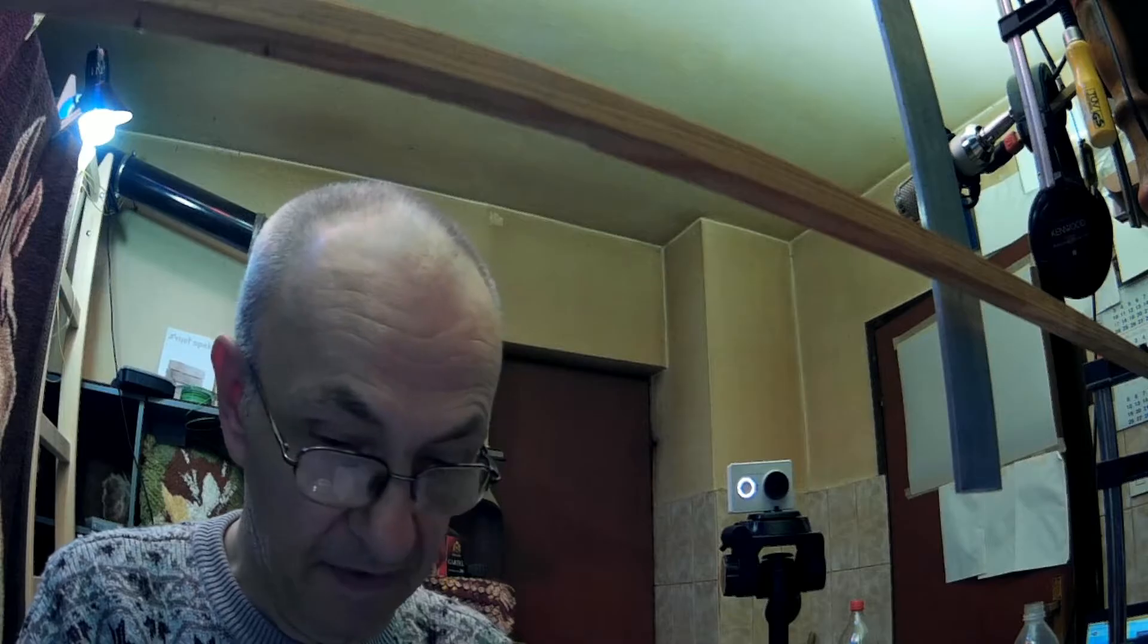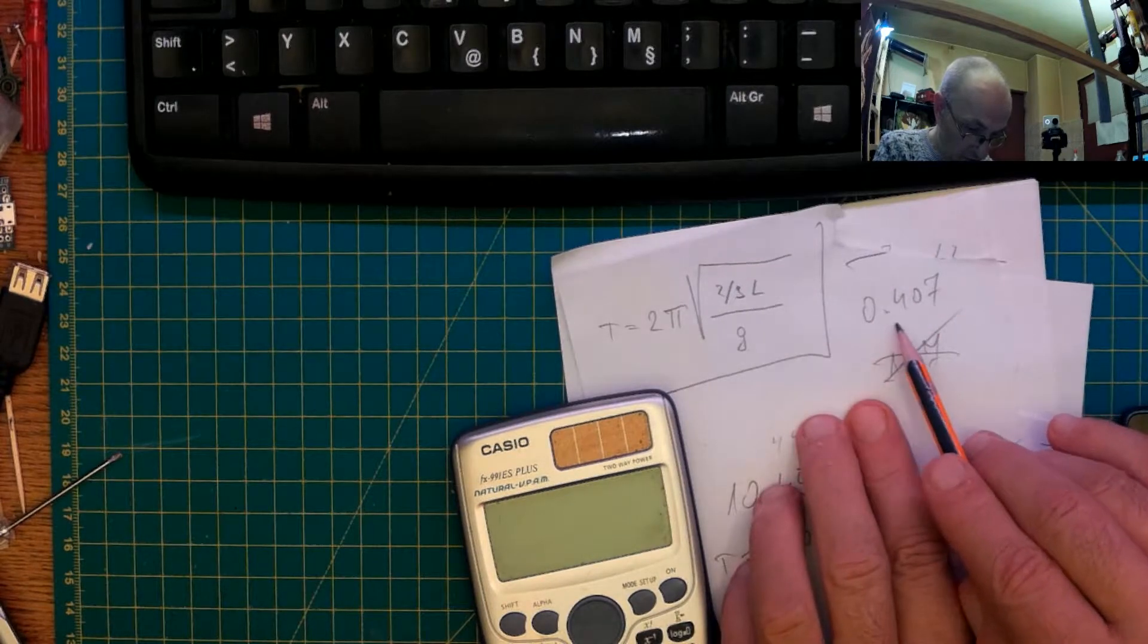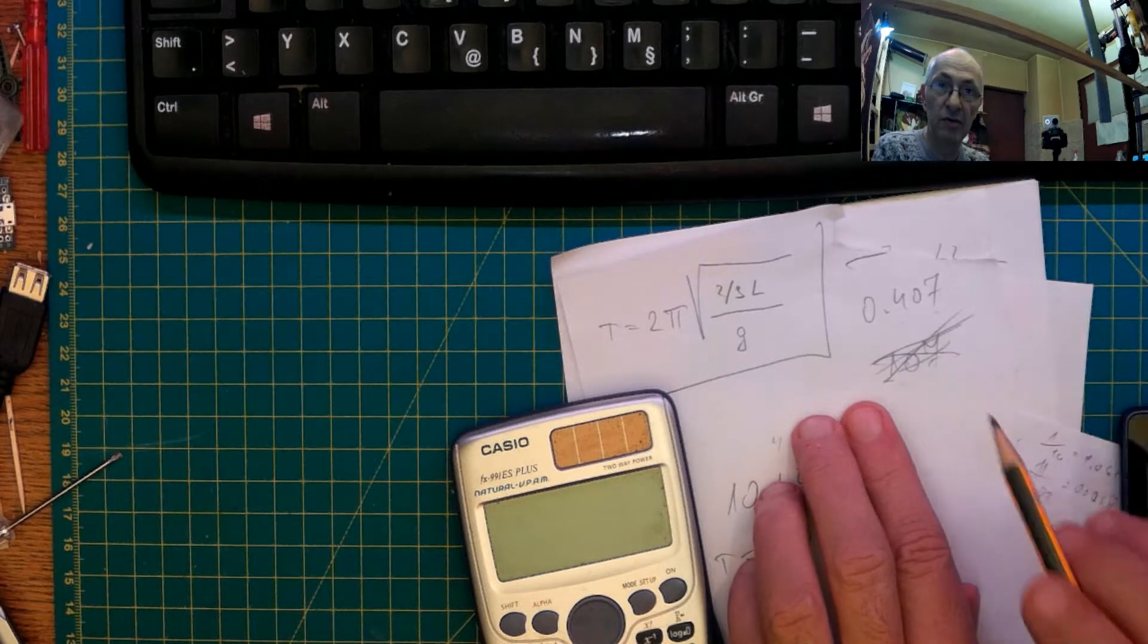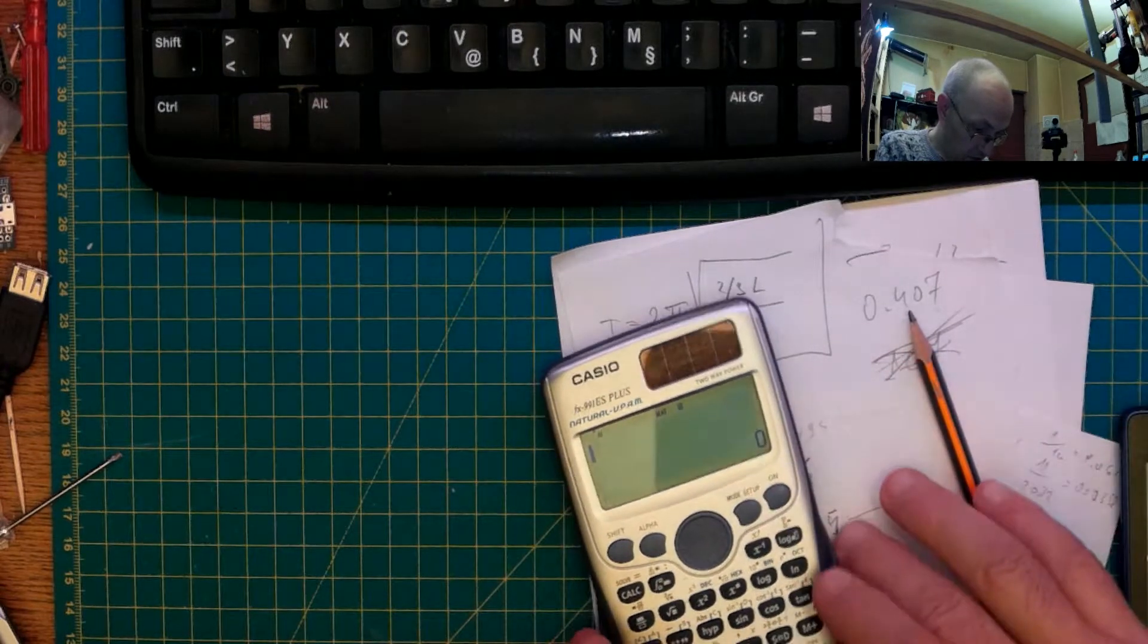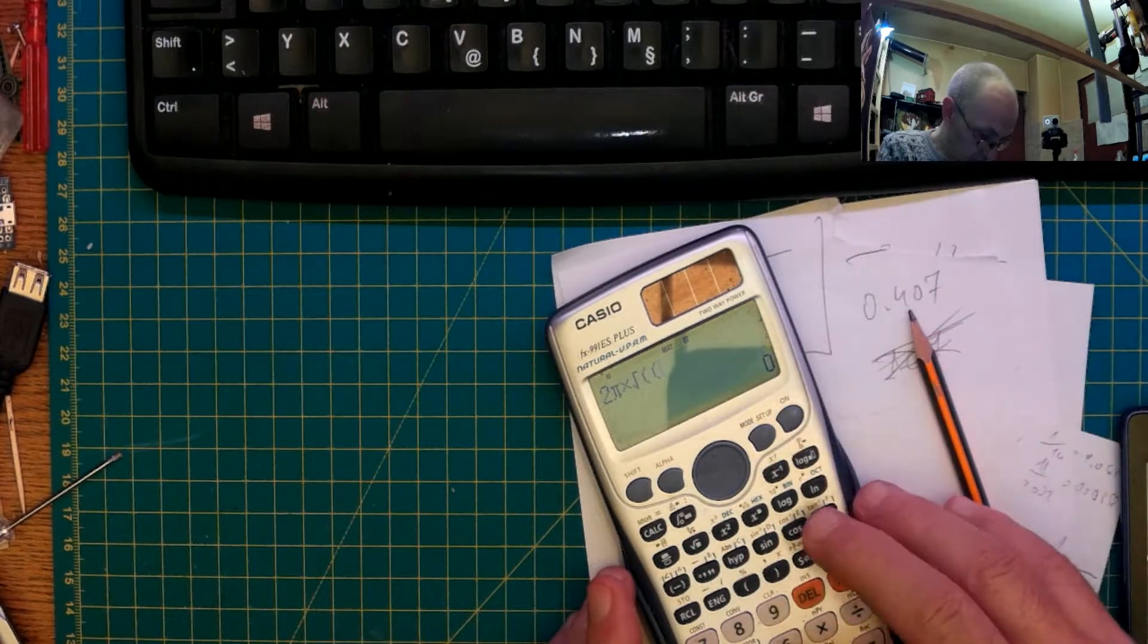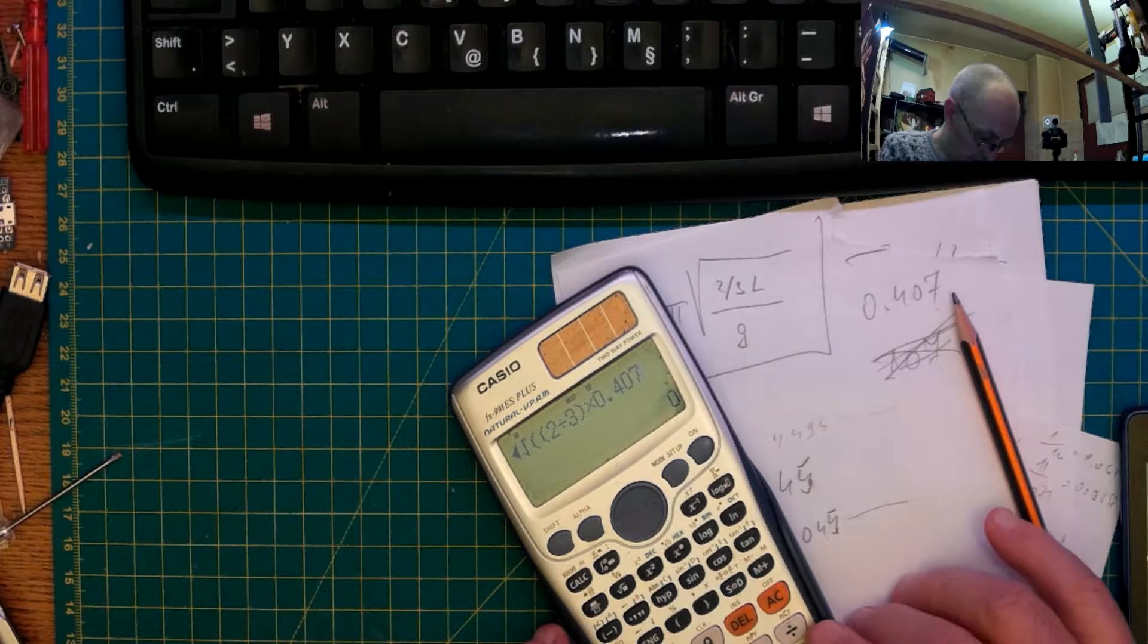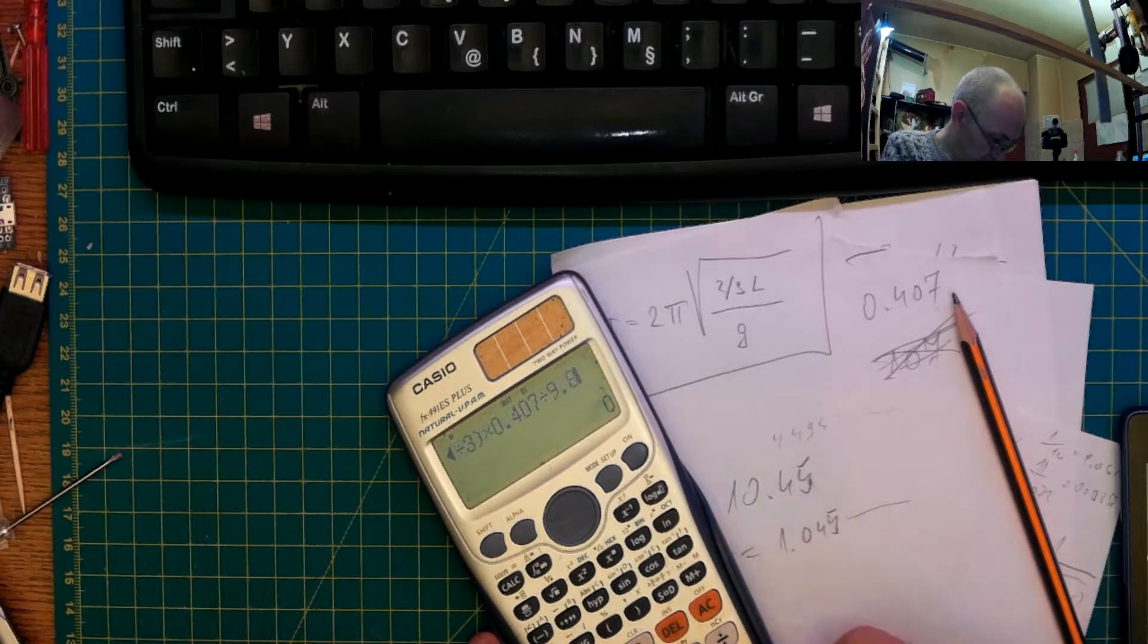So, 2 pi, let me bring this calculation. This beam is 0.407 meters, or 407 millimeters, weight is 107 grams, but this is not important at all. So, this is calculated, so let me show how to calculate 2 pi times square root of L is 0.407 divided by G, 9.806.